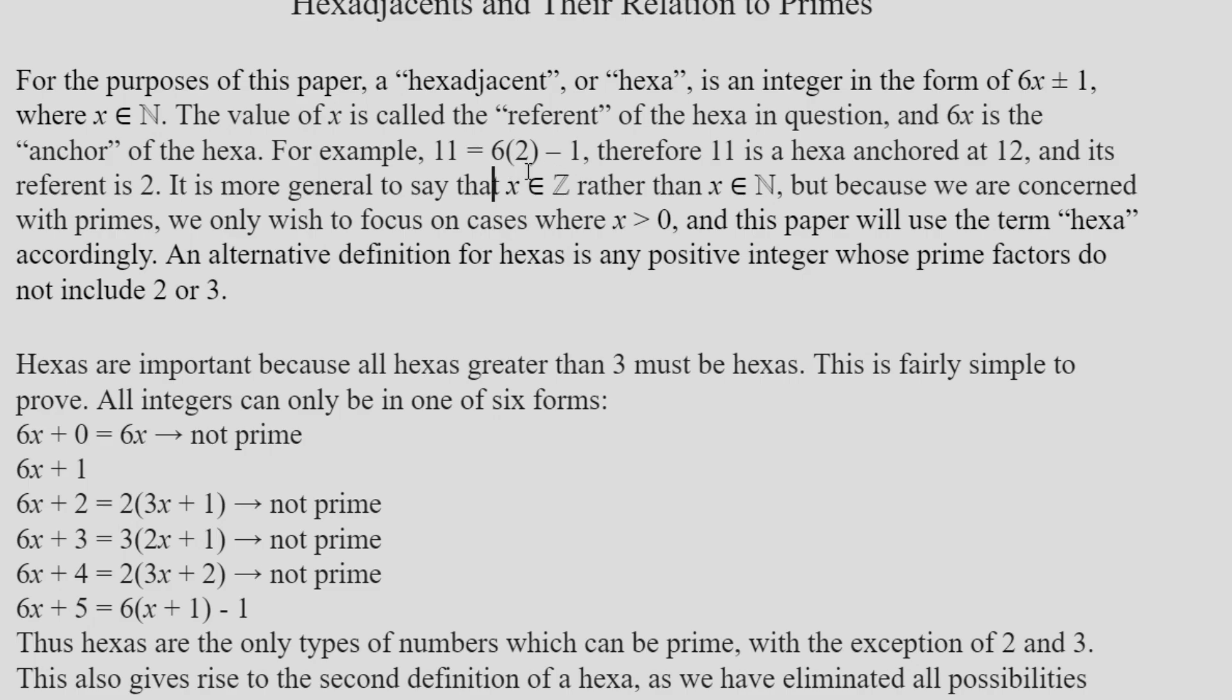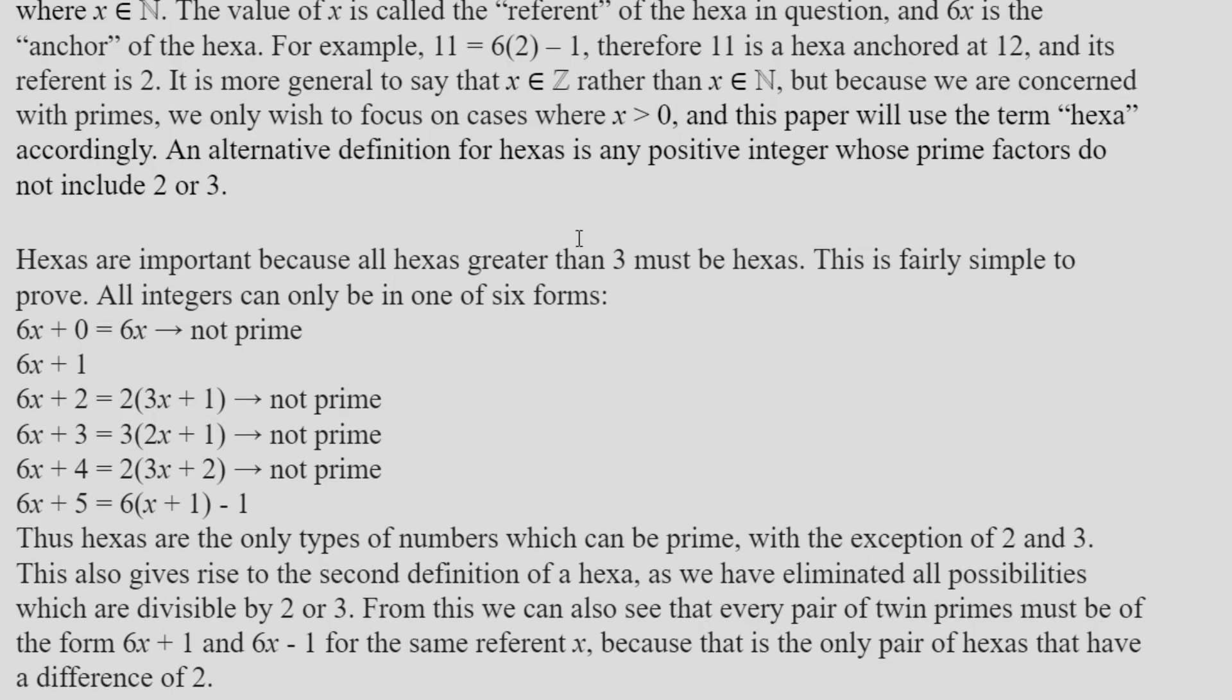Now it may be worth noting that a referent actually corresponds to a pair of hexas. So 11 and 13 both have an anchor of 12 and a referent of 2. Now why are hexas important? Many mathematicians will be familiar with the fact that these are the only class of integers which are even possible to be primes. And I put a version of Euler's proof for that statement in there.